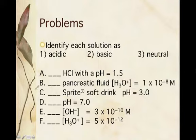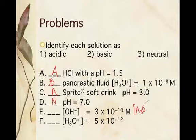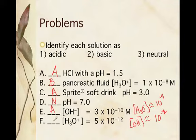Let's identify whether each solution is acidic, basic, or neutral. If pH is 1.5, it is acidic. Pancreatic fluid with a hydronium concentration of 1 times 10 to the negative 8th is basic. One solution is acidic, another is neutral. For one that gives us [OH⁻], the [OH⁻] is approximately 10 to the negative 4th, so hydronium is greater and it's acidic. The last one is basic because the hydroxide concentration would be greater at approximately 10 to the negative 2nd.